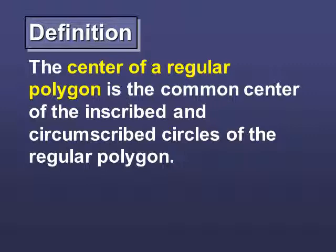Let's talk about the center of a regular polygon. First of all, a regular polygon means that it's equilateral and equal angular. We don't know how many sides it has because it can have infinitely many, but the common center of the inscribed and the circumscribed circles of the regular polygon is also the center of the regular polygon.